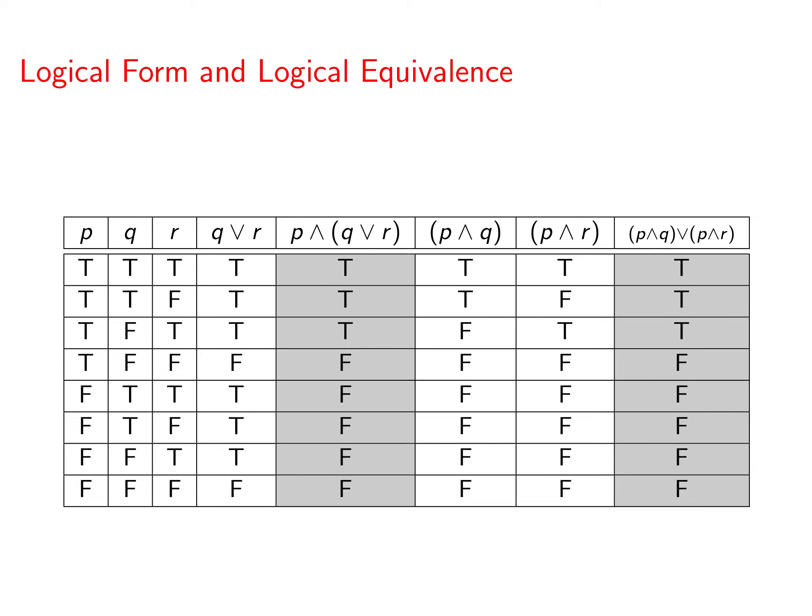So this is what you should have for your truth table. Check it over. Make sure that you've got the same thing that I do. And what we want to see now is that we've got these two columns in the truth table. Those were the ones that we were interested in. Notice that they have the same truths and falses in there. That means that the corresponding statement forms are logically equivalent.